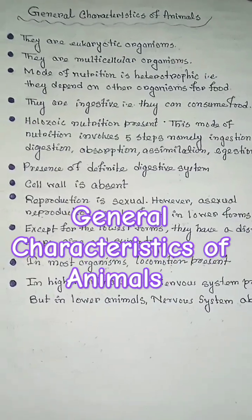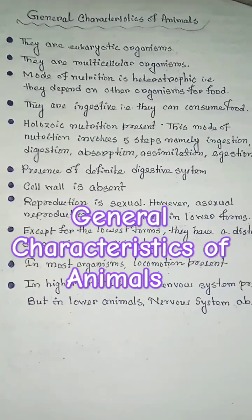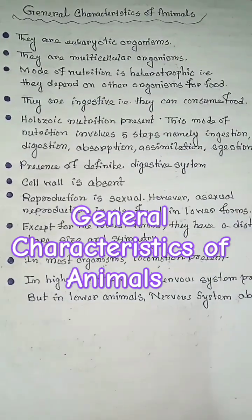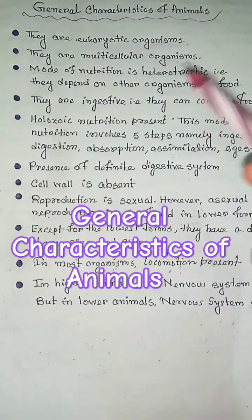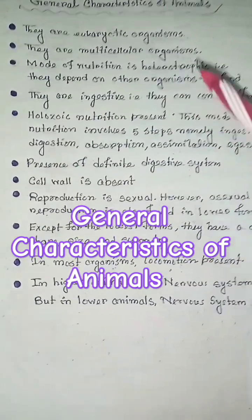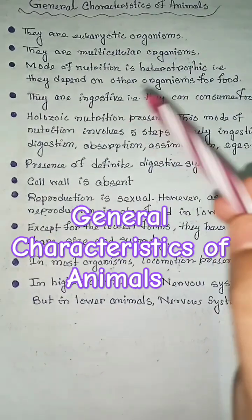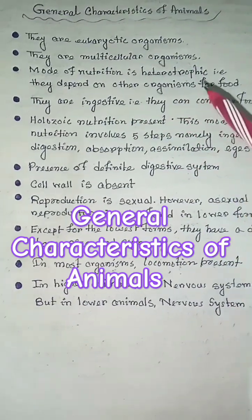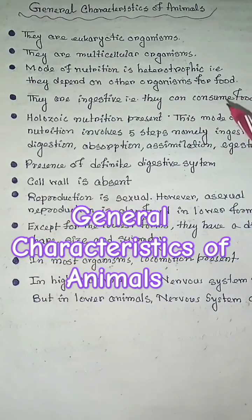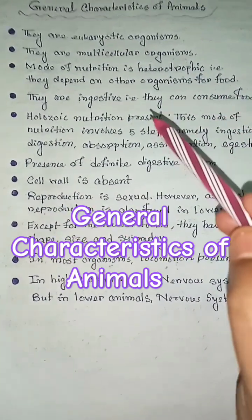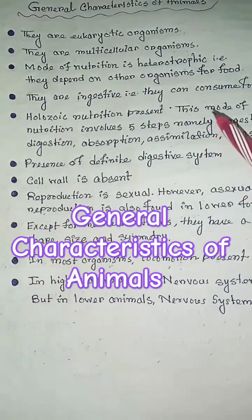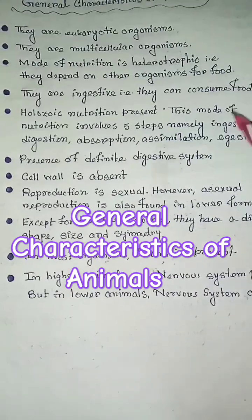General characteristics of animals: they are eukaryotic organisms and multicellular organisms. Their mode of nutrition is heterotrophic, meaning they depend on other organisms for food.